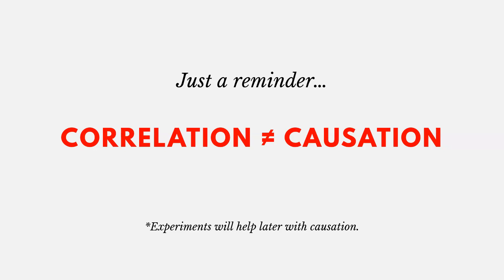One important thing to remember is that correlation is not causation. Just because there's a relationship in how two variables move, it doesn't mean that a change in one is causing the change in the other. Experiments can be used to help us later establish causation.